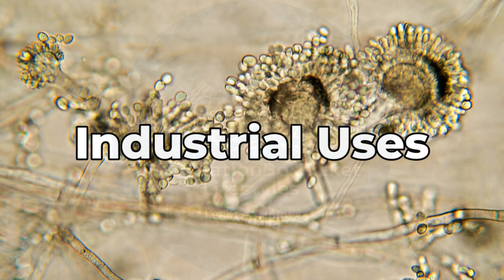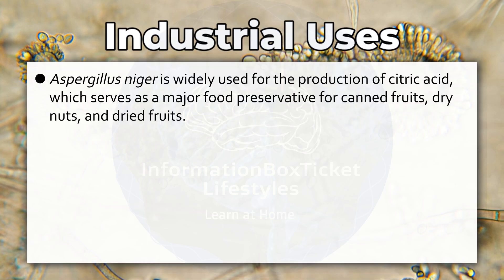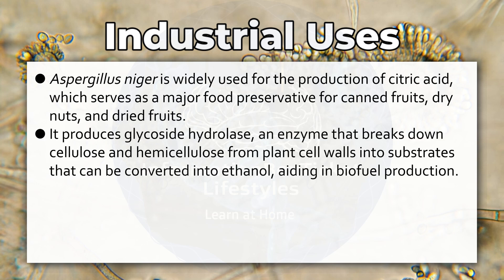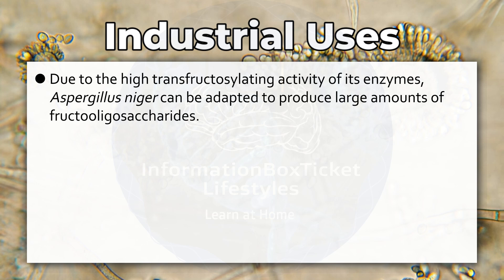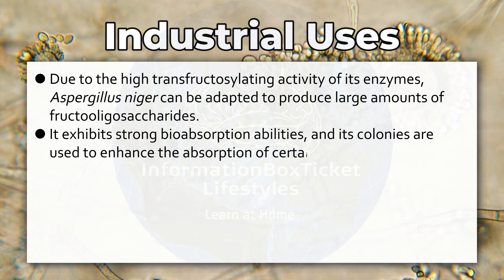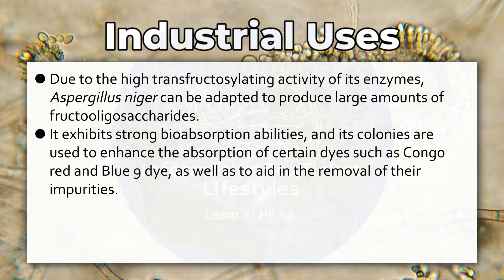Industrial Uses of Aspergillus niger. Aspergillus niger is widely used for the production of citric acid, which serves as a major food preservative for canned fruits, dry nuts, and dried fruits. It produces glycoside hydrolase, an enzyme that breaks down cellulose and hemicellulose from plant cell walls into substrates convertible into ethanol, aiding in biofuel production. It can also be utilized for the production of bioactive metabolites and pharmaceutical products. Due to the high transfructosylating activity of its enzymes, Aspergillus niger can produce large amounts of fructooligosaccharides. It also exhibits strong bioabsorption abilities, with its colonies used to enhance the absorption of certain dyes such as Congo Red and Blue 9-dye, and to aid in the removal of their impurities.